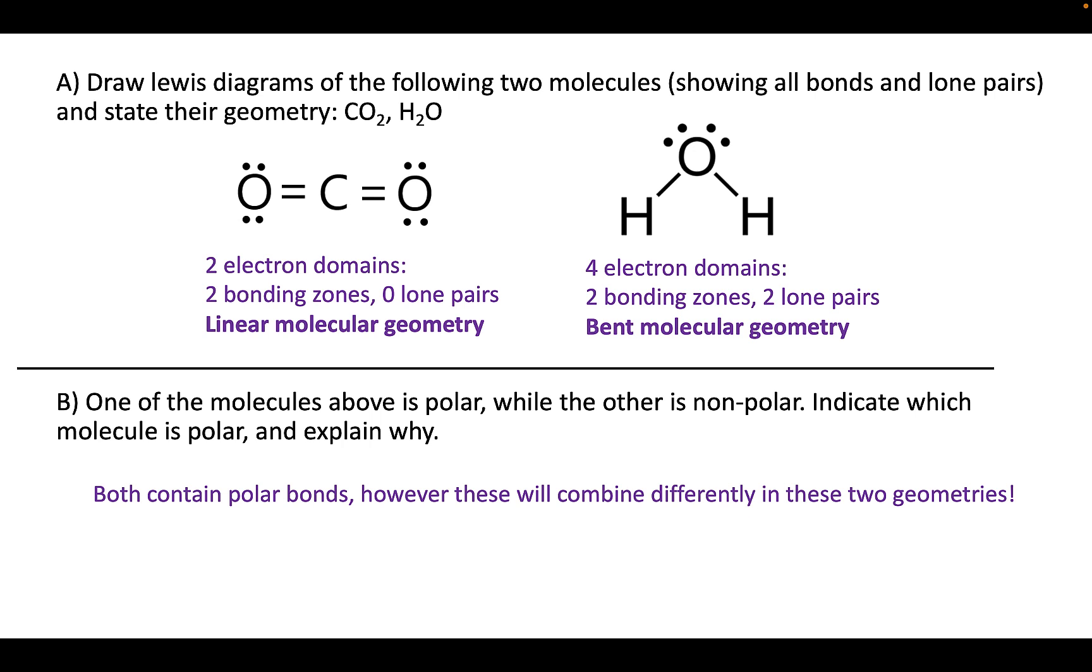While we do have polar bonds in both of these cases, carbon dioxide is non-polar because while these bonds are polar themselves, they're linear in this geometry, and therefore they're pulling in opposite directions and they're going to cancel. Water is polar because of its bent structure. It leads to a non-zero net dipole because these bond dipoles will be pointing inward and upward, and that upward component is going to add to make a non-zero net dipole and a polar molecule.